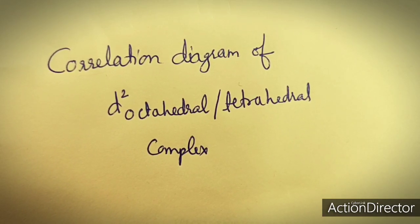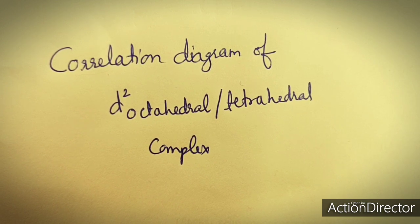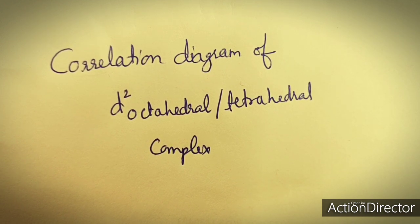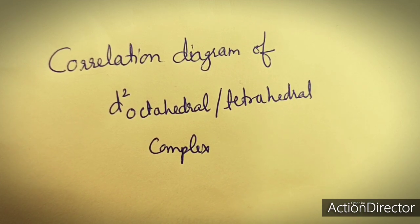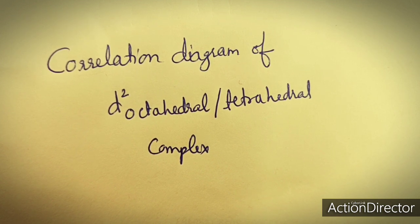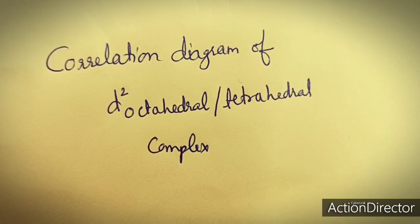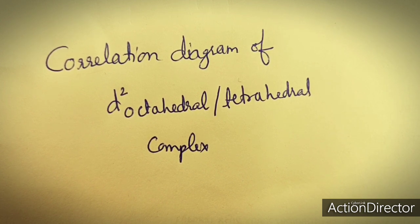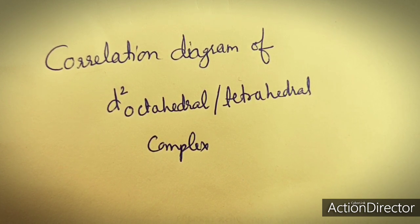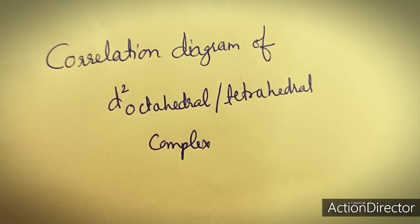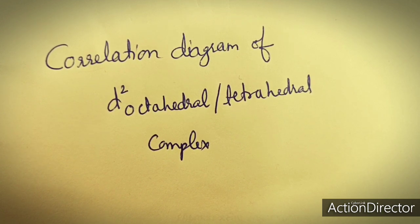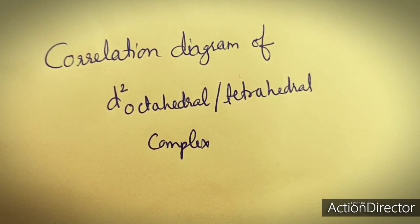Dear students, in this video we will construct the correlation diagram of D² octahedral as well as tetrahedral complexes. For this construction we have to follow some steps: first we have to obtain the energy states of weak field complexes, then the energy states for strong field complexes. We arrange these energy states in increasing order of energy, putting weak field states at the extreme left and strong field states at the right, then correlate same symmetry terms by connecting them via dotted lines.